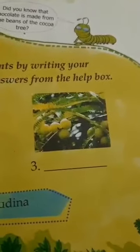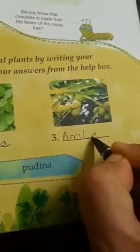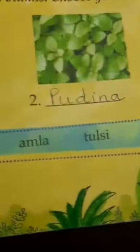And how about this third picture? Can you see the fruit growing there — the yellow and greenish balls? Yes, they are so healthy to eat. So which plant is this? It is amla. So let's write amla over here: A-M-L-A. You can also see the spellings from the help box.